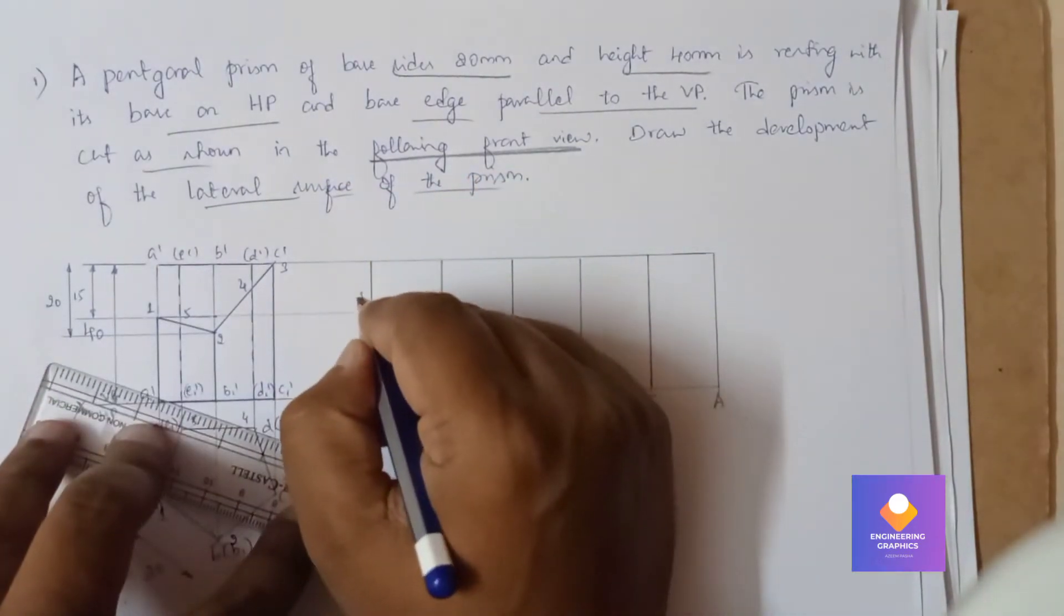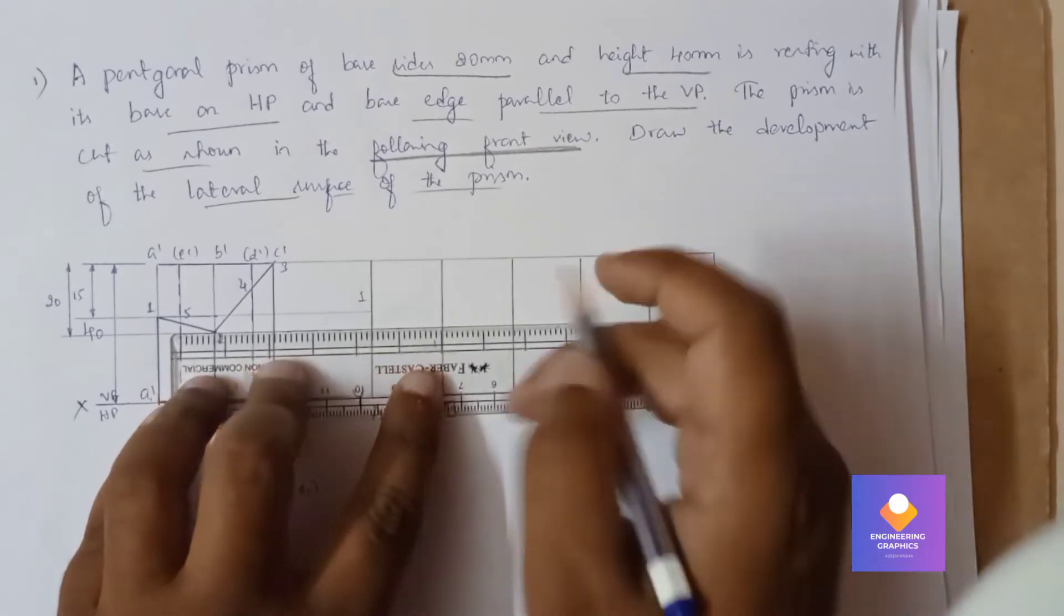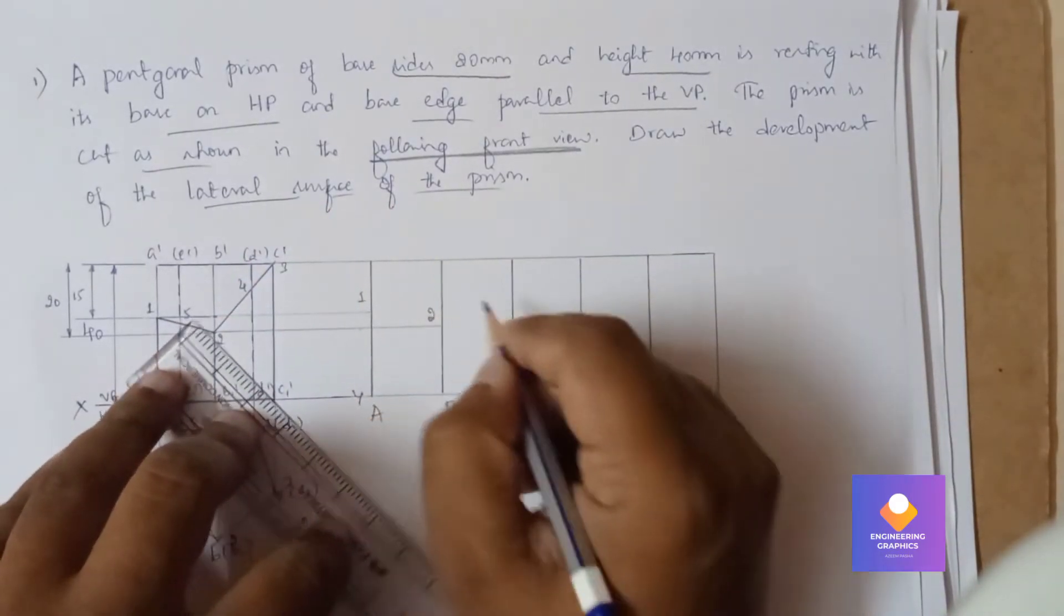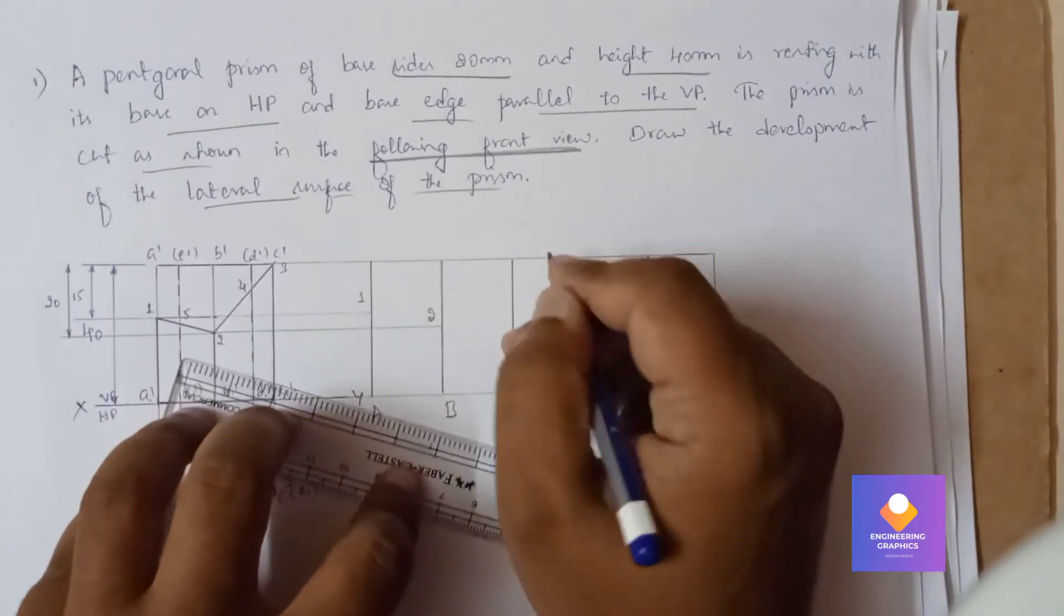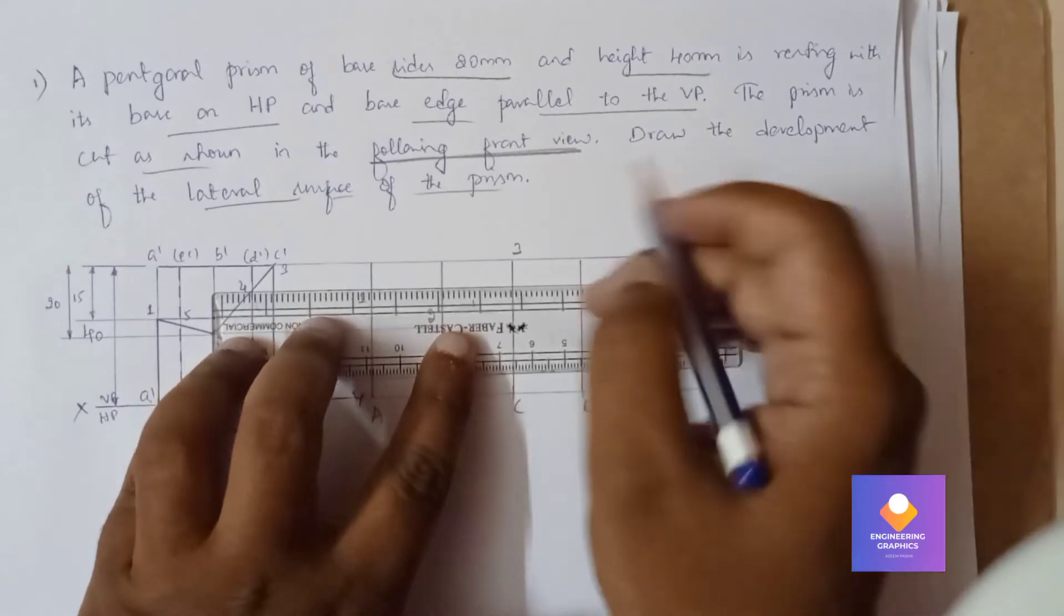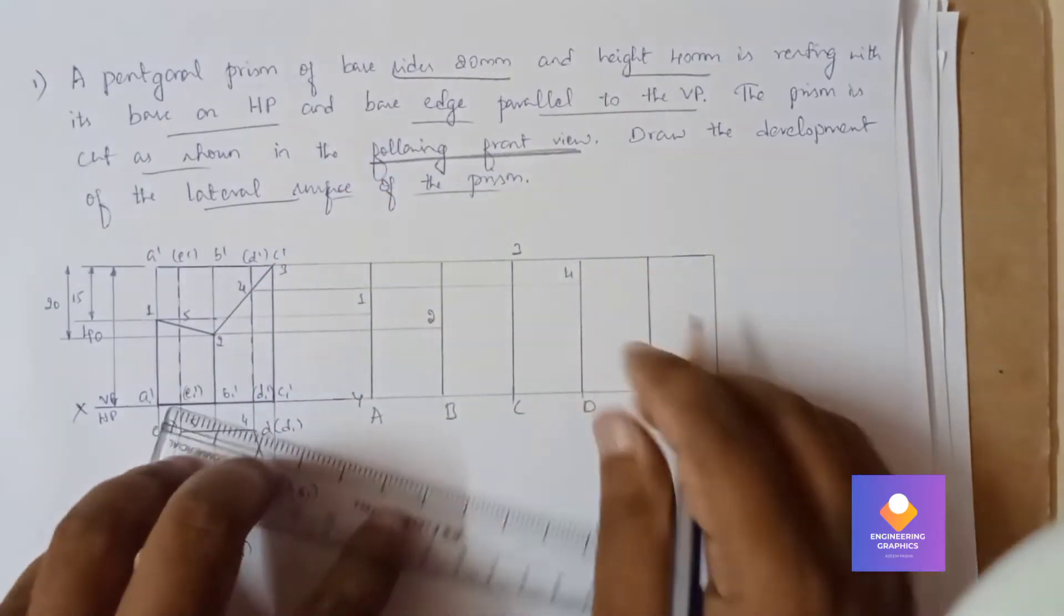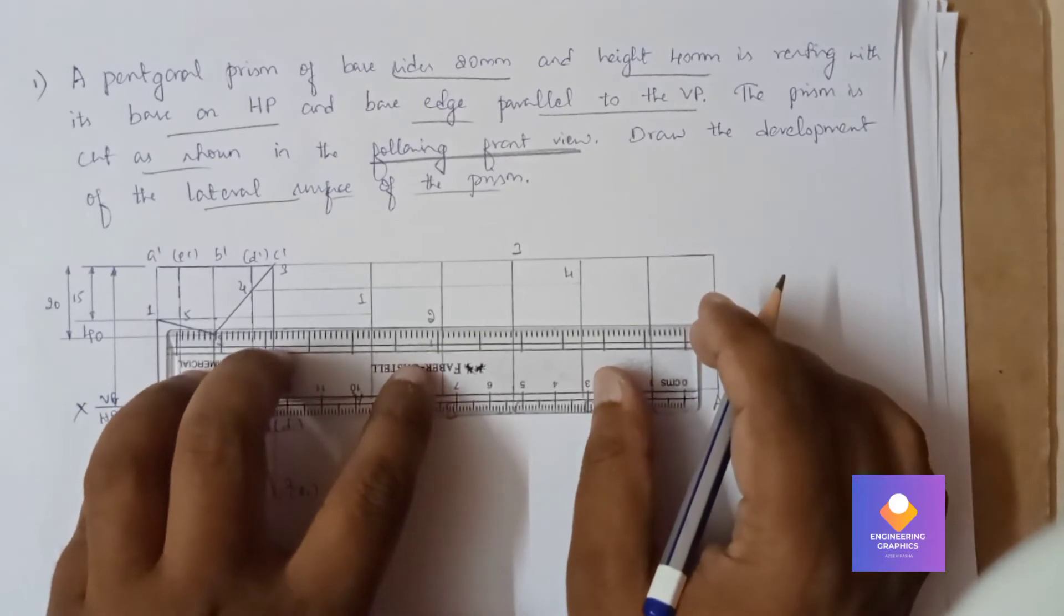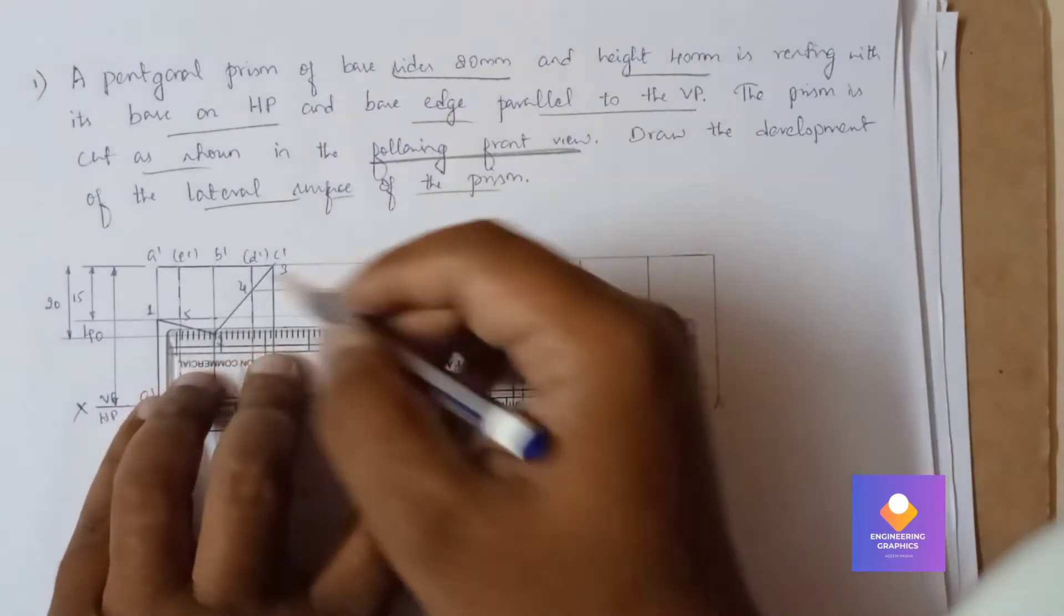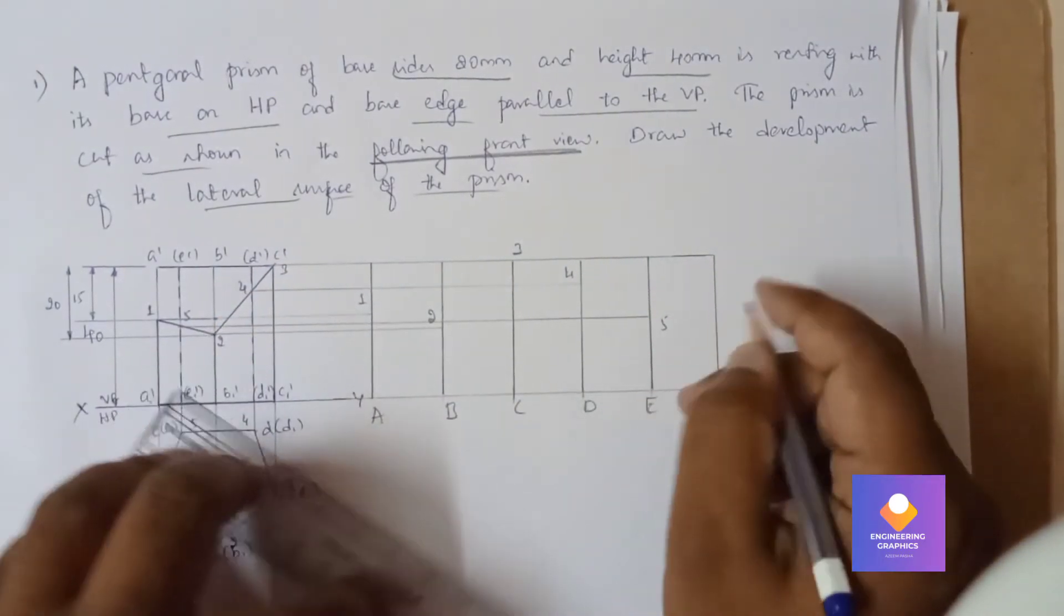Similarly, I will extend point two on line B. Point three is here at the extreme point. Point four I will be extending on line D, and point five I will be extending on line E. You need to draw thin lines here.